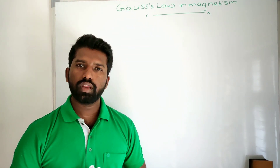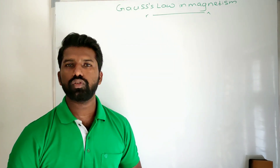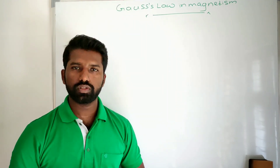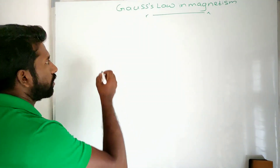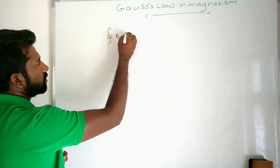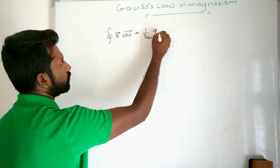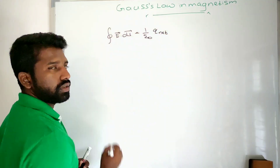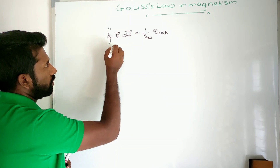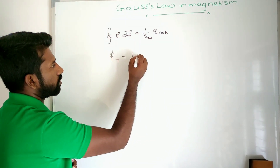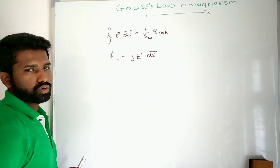The Gauss's law in electrostatics states that total electric flux around a closed loop is 1 by epsilon times net charge enclosed in that loop. That means the integral of E dot dS is equal to 1 by epsilon-0 into Q. This is the net charge enclosed in the closed loop, and the integral E dot dS is the total electric flux around any closed loop.